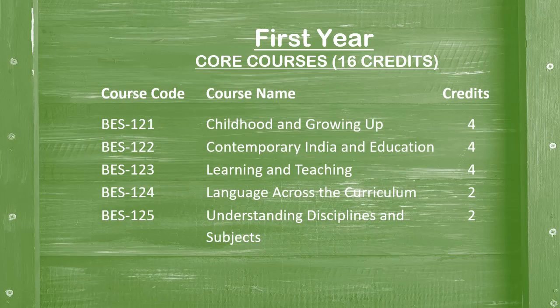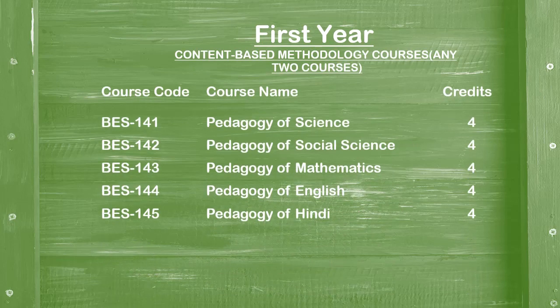In the first year, we offer five core courses: Childhood and Growing Up, Contemporary India and Education, and Learning and Teaching — these three are of four credits each. Language Across Curriculum and Understanding Discipline and Subjects are of two credits each, totaling 16 credits of core courses. We also offer five content-based methodology courses: Pedagogy of Science, Pedagogy of Social Science, Pedagogy of Mathematics, Pedagogy of English, and Pedagogy of Hindi. You need to opt any two of these courses — for example, Pedagogy of Science and Mathematics, or Pedagogy of Social Science and English, or any other combination.